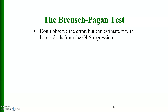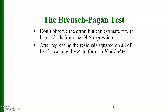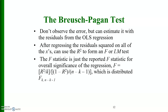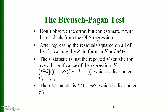The Breusch-Pagan test: we do not observe the error, but can estimate it with the residual from the OLS regression. After regressing the residuals squared on all of the x variables, we can use the R-squared to form an F or LM test. The F-statistic is the reported F-statistic for overall significance, distributed F(k, n minus k minus 1). The LM statistic is LM equals n times R-squared, which has a chi-squared distribution with k degrees of freedom.